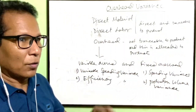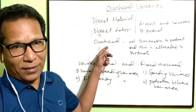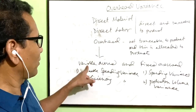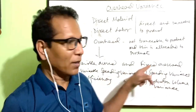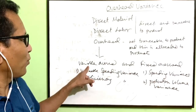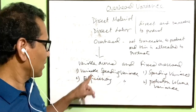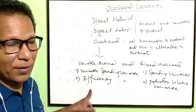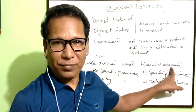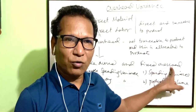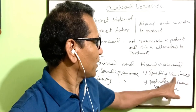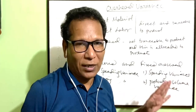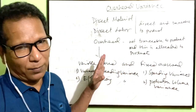Total overhead variance is subdivided into two: one is variable overhead and the other is fixed overhead. Variable overhead is also divided into two parts: variable spending variance and efficiency variance. Fixed overhead is also divided into two parts: spending variance and production volume variance. So there are four types of variance in total.